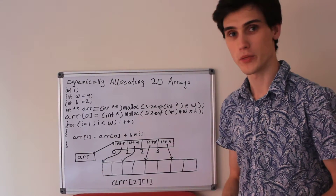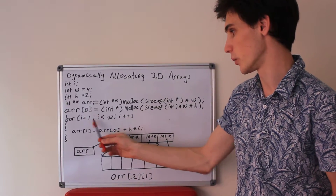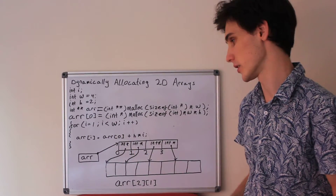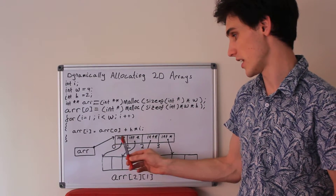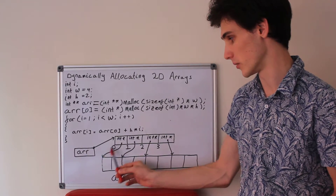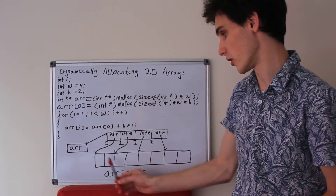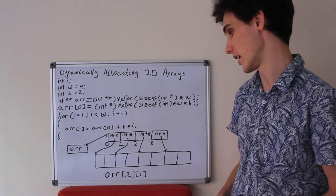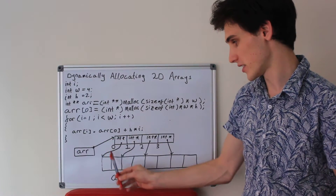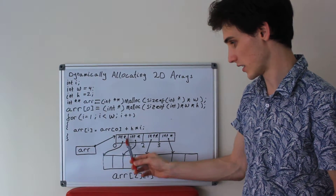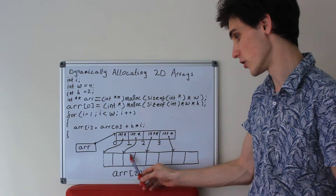Now we have a for loop. For each element besides the first one — so for i equals 1, i is less than the width, i++ — we set the array at i to be the array at 0, which is a pointer to the first element, plus h times i, the height of our two-dimensional array multiplied by the current index. This goes through each pointer and sets it to point to the correct position in our array of elements, two steps apart.